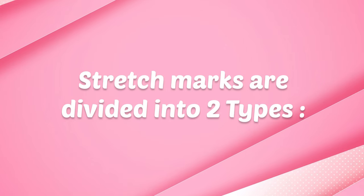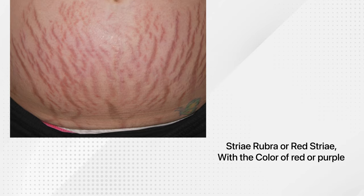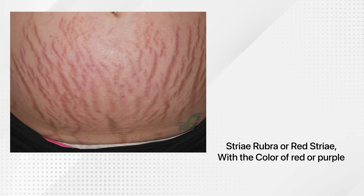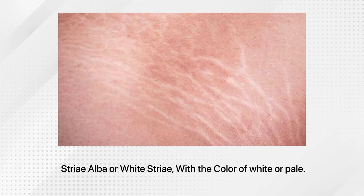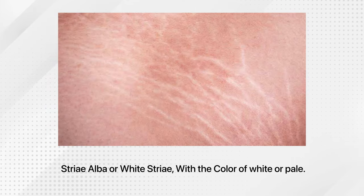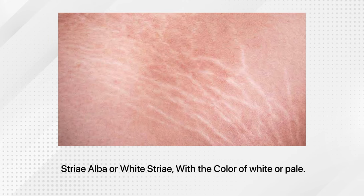Stretch marks are divided into two types. First, stria rubra or red stria, with the color of red or purple. Second, stria alba or white stria, with the color of white or pale.